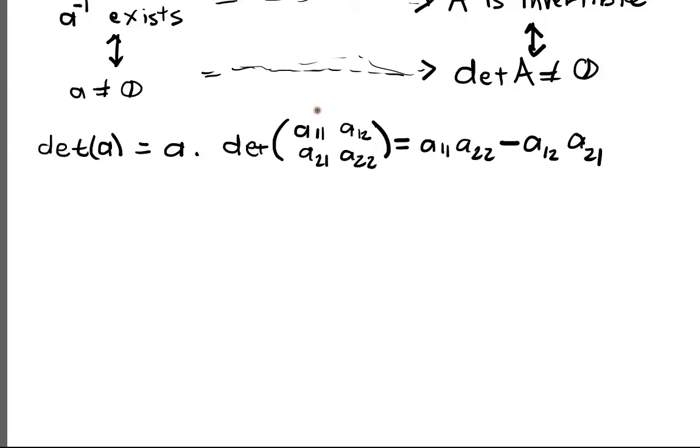But this is an algebraic condition. This is an algebraic number that you computed using the entries of the matrix. But the determinant also has a very nice geometric interpretation. And so we're going to briefly discuss that without proof, because the proof is a little involved for one of these videos.